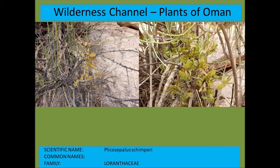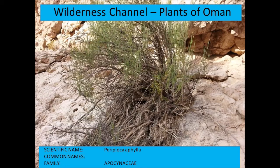Plicosepalus chimperi has yellow flowers, as opposed to Plicosepalus acaciae which has red flowers. Both are parasitic plants. Periploca aphylla with the purple flowers.